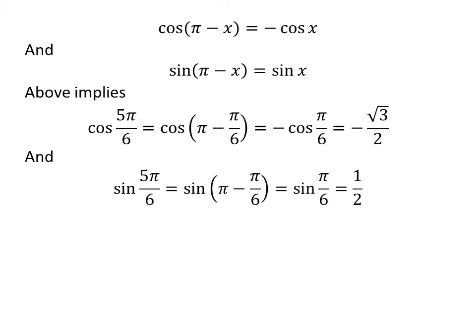So, above implies cosine of 5 times pi upon 6 is equal to minus square root of 3 upon 2 and sine of 5 times pi upon 6 is equal to half.